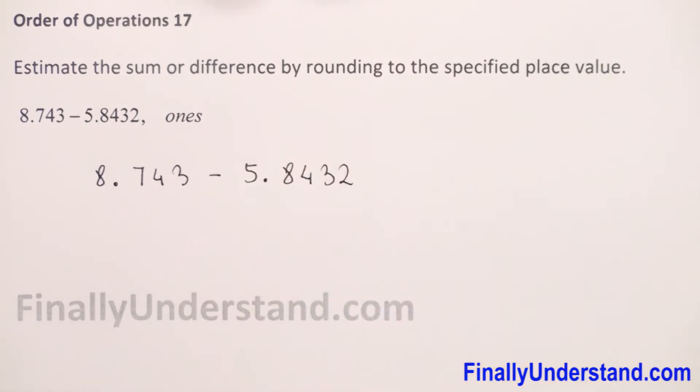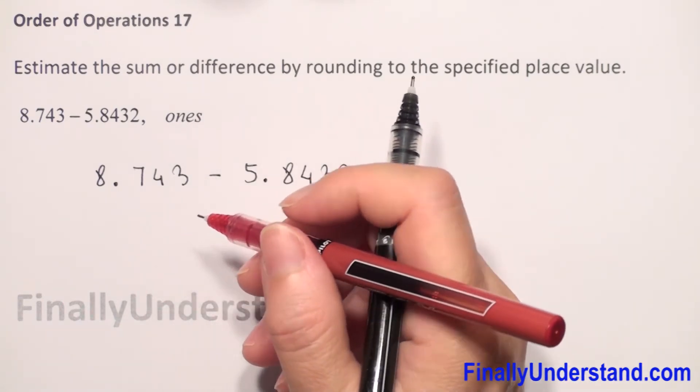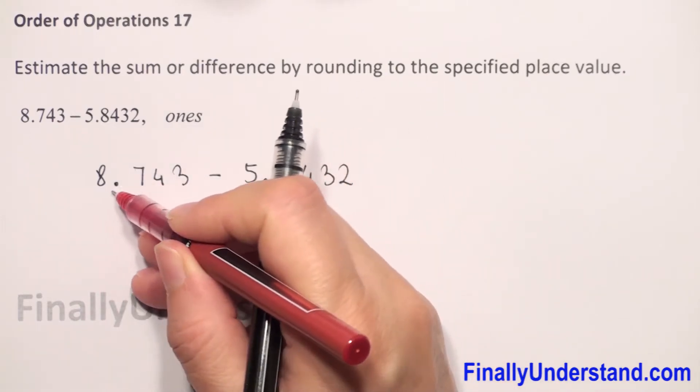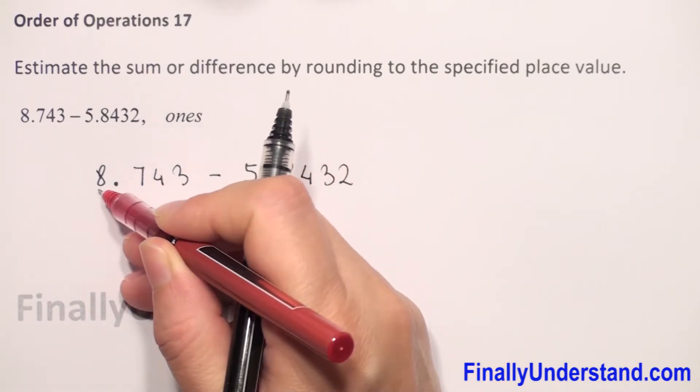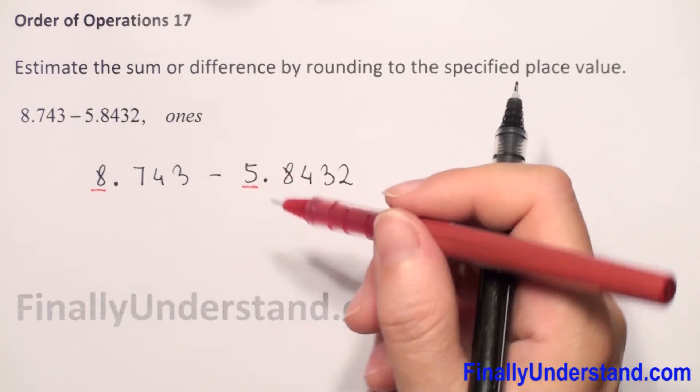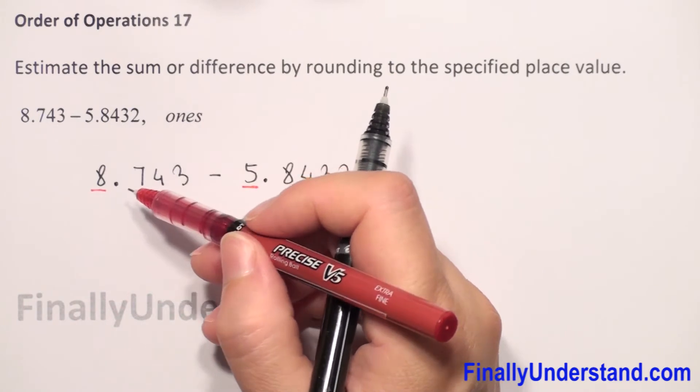First, we have to round each number to the nearest ones. The ones place is the first digit before the decimal point.